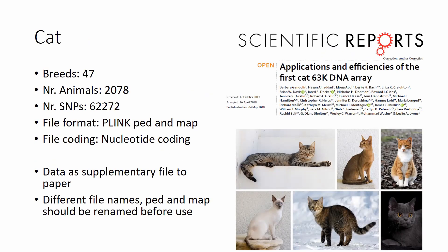We have also companion animals, and the first of these are cats genotyped by the 63k array. We have 47 breeds, more than 2,000 animals, and around 63,000 SNPs. The file format is PLINK PED and MAP files, which is also really convenient, with nucleotide coding. Normally data is uploaded to a website, but in this case it is a supplementary file to the paper. The PED and MAP files are in different supplementary files, so before you use them you should rename the files so they have the same core name to use them with PLINK.